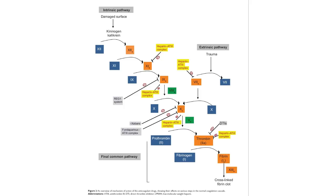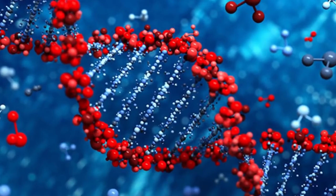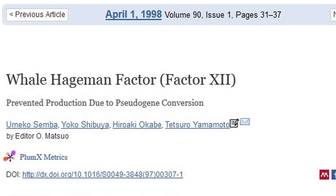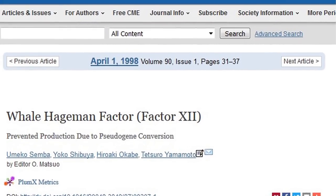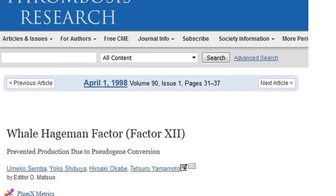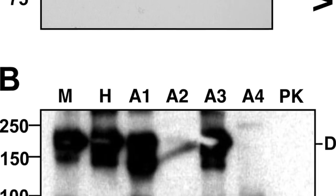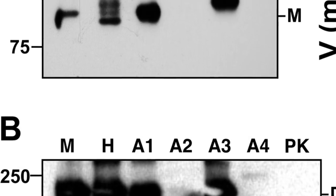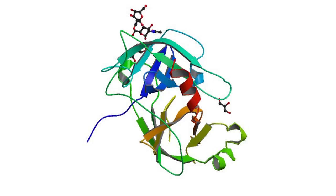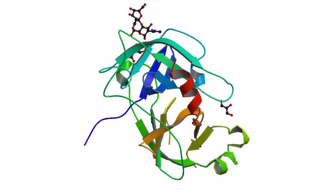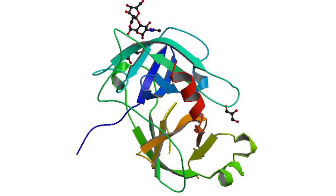The exception to this homology is whales, which do not possess factor 12. In an April 1998 paper in the journal Thrombosis Research, a team led by Umeko Semba analyzed the genes of whales, humans, and cows, and discovered that the genes for factor 12 were present in whales but truncated and rendered non-functional due to two mutations resulting in a frameshift. This shows that not only is factor 12 not necessary for the clotting cascade, but it is also removable from organisms that have come to rely on it.